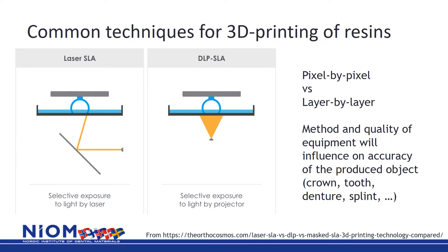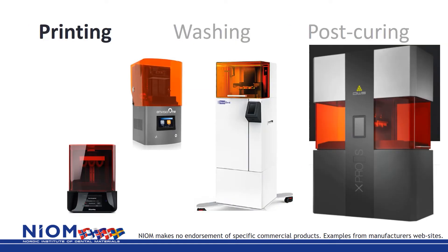There are also other methods and materials available, such as jetting techniques, which may become important for the dental industry in the future. A lot of different printers are available in various sizes. They may have different dominant wavelengths — 385 or 405 nanometers — and have different working areas, being able to produce one or more objects at the same time. The speed, accuracy, and pixel size will vary between printers.